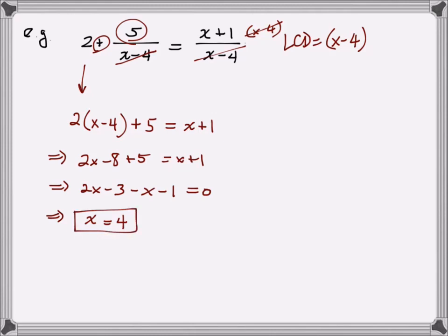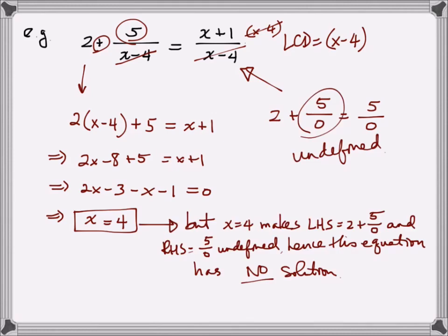If I now put x equals 4 back into my original expressions, notice that we will get the equation 2 plus 5 over 0 equals 5 over 0. Does that actually make sense? Can you actually do a division by 0? And the answer is no, we can't do division by 0 because that's undefined, which means that the only solution we got, which was x equals 4, doesn't work for this equation, which means that this equation has no solution. You can justify it by writing the following: x equals 4 makes the left-hand side, which is 2 plus 5 over 0, and the right-hand side, which is 5 over 0, undefined. Hence this equation has no solution.